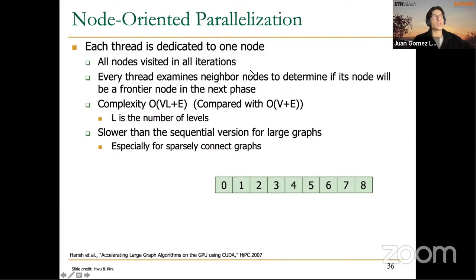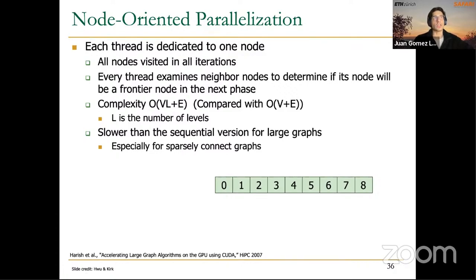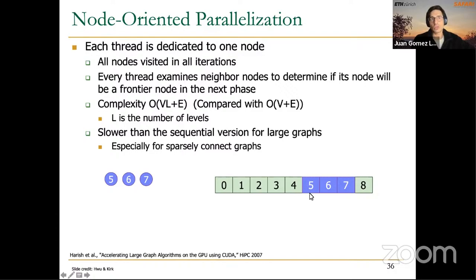The problem with this approach is that in each iteration, the only active threads are those assigned to vertices actually in the frontier. For example, with a frontier composed of nodes 5, 6, and 7 — out of nine threads, only three are active. In the next frontier, discovering neighbors 8 and 0, it's only two threads that are active. This is a pretty inefficient use of resources.